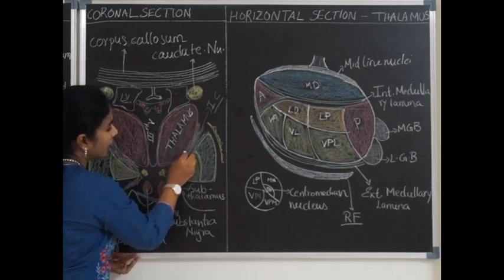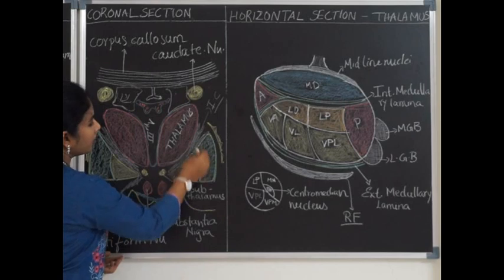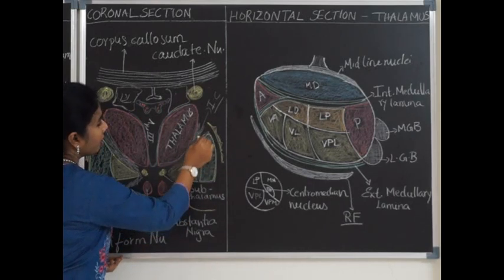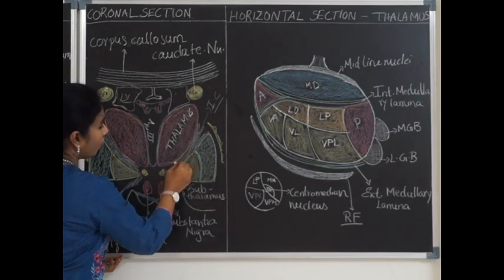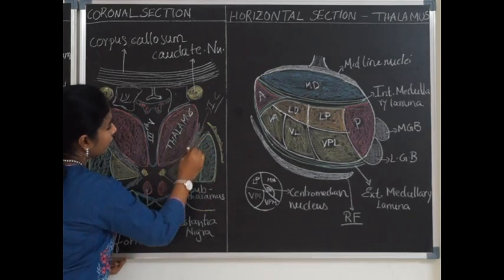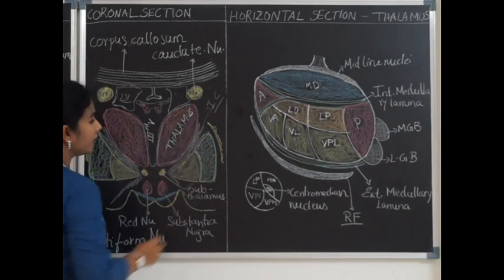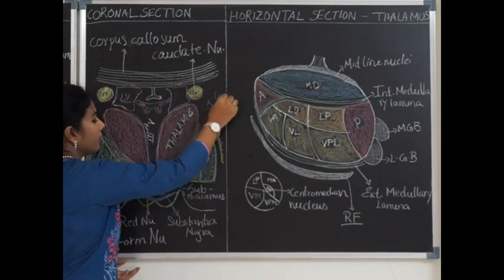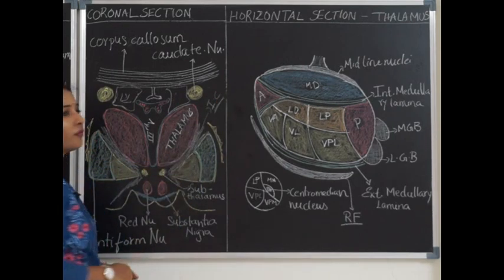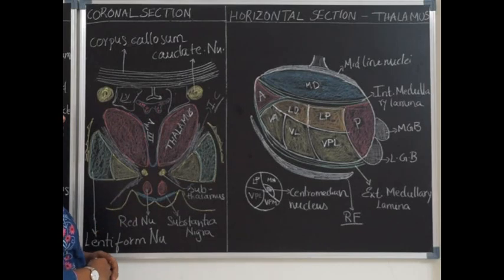The lateral surface of the thalamus is separated from the lentiform nucleus by means of the internal capsule. So the lateral surface of the thalamus is related to the anterior limb of the internal capsule. That covers the relations of the thalamus.